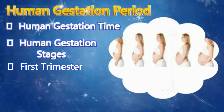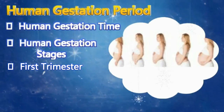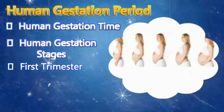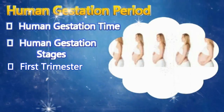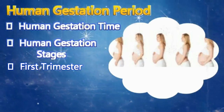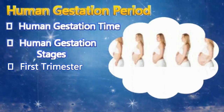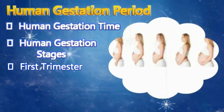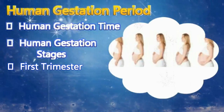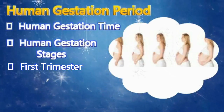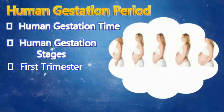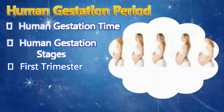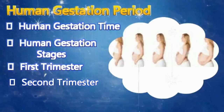The first trimester begins when the fetus attaches itself to the womb and it extends till the completion of the third month of pregnancy. Though not many women come to know that they are pregnant initially, some do experience implantation bleeding, which is many times mistaken for menstrual periods. It is during the first trimester, especially during the fifth or sixth week, that pregnancy signs start appearing. One of the most common symptoms is morning sickness — one may feel nausea and also experience vomiting, fatigue, and tiredness. A home pregnancy test during this time can confirm pregnancy. It is important to be very careful during this period because most miscarriages have been reported to occur during the first three months.